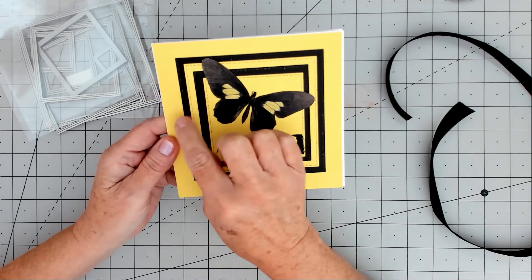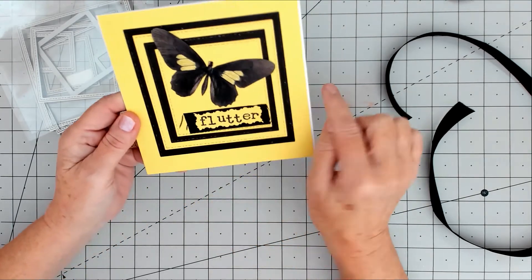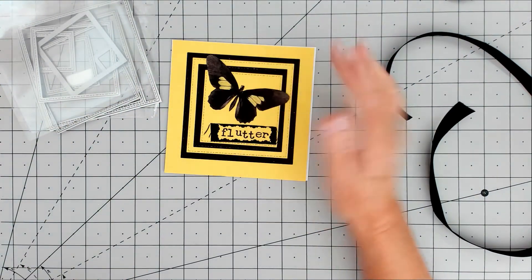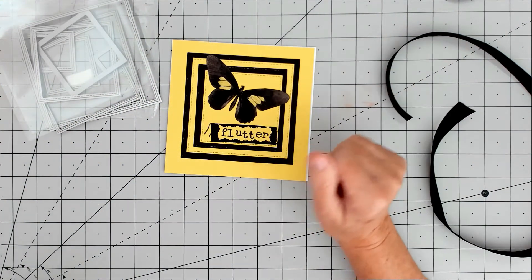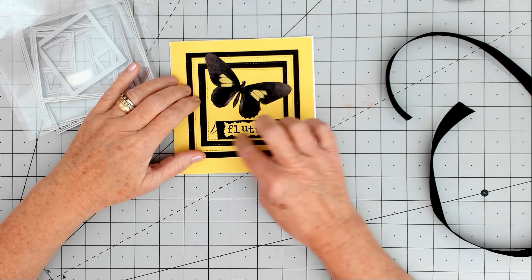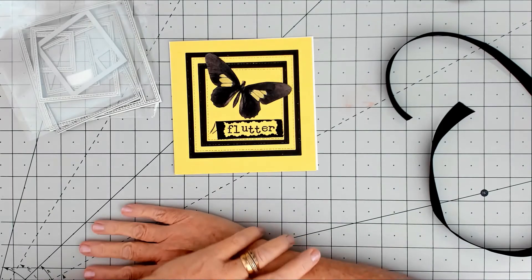I was going to put a piece of ribbon across here and tie it there, but I got carried away with sticking it all down. So what I did was use the little bit of ribbon to back the little saying, which is 'flutter.'